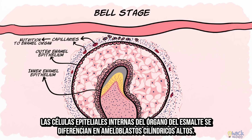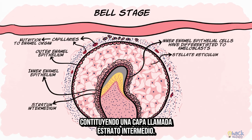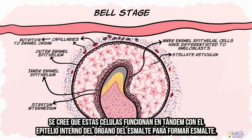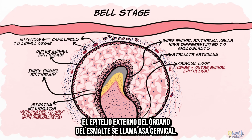The inner enamel epithelial cells differentiate in this stage to become tall columnar ameloblasts. Some cells between the inner enamel epithelium and the stellate reticulum become spindle-shaped and form a layer called the stratum intermedium. These cells are speculated to work in tandem with the inner enamel epithelium to form the enamel. The rim of the enamel organ at the cervical region where the inner enamel epithelium meets the outer enamel epithelium is called the cervical loop.